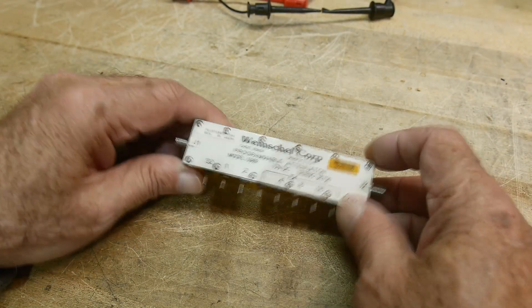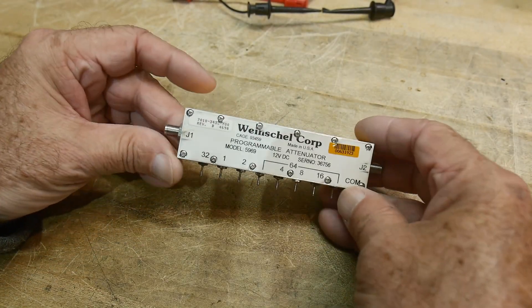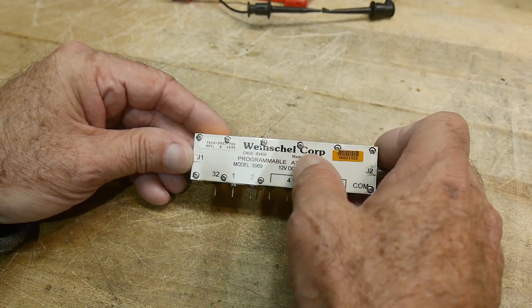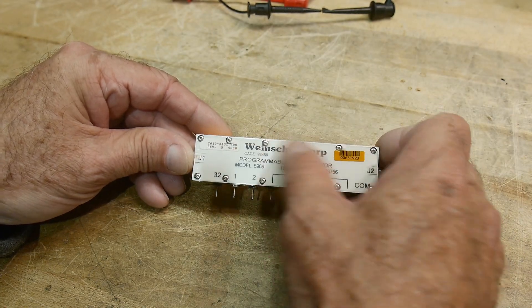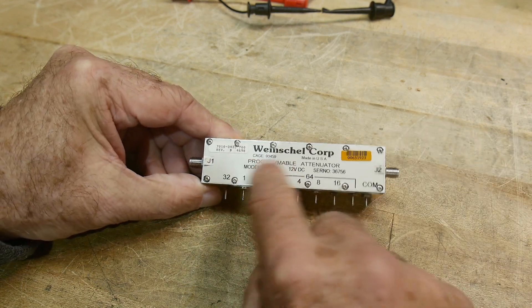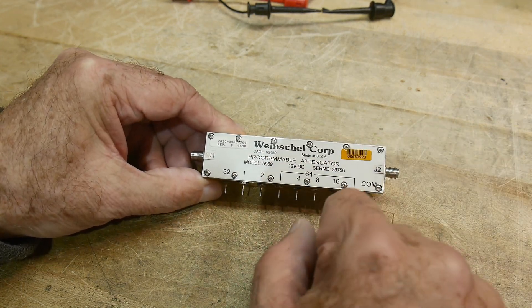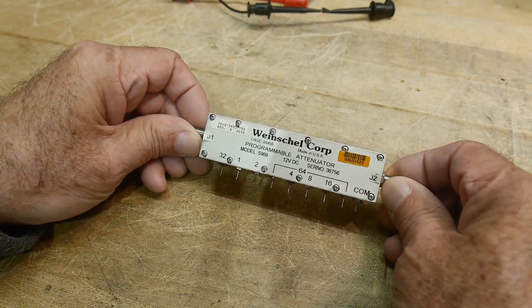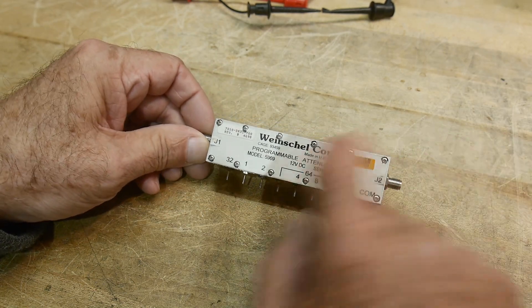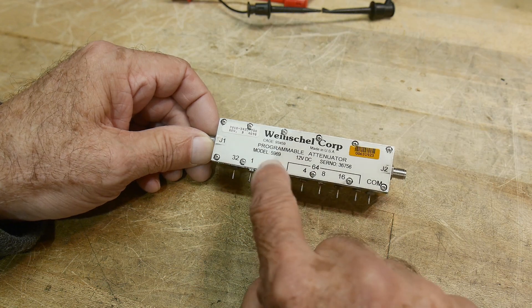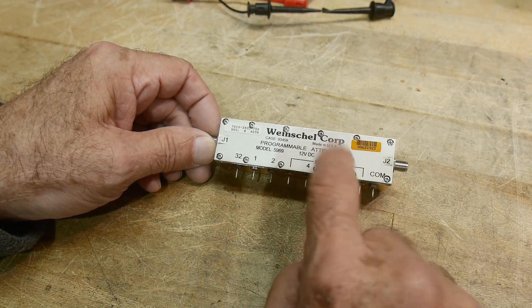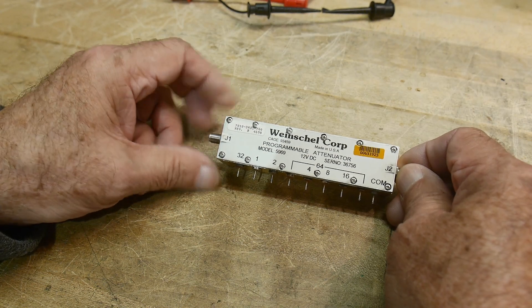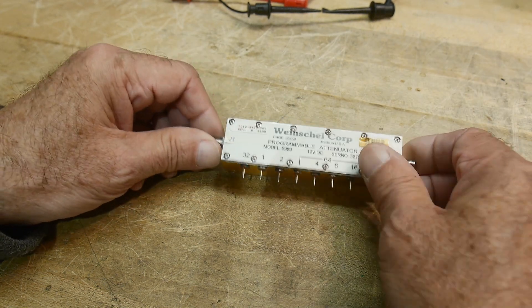All right, one of the nice things that Mike sent was this attenuator. Now it's a USA made part, so I don't know if they've westernized it and called it Weinchel or it's Veinchel. So let me know if it's a W or a V, but it's a programmable attenuator and it's 12 volt actuators and it has 1 dB step, so it's quite unusual.